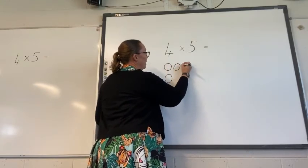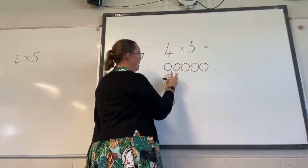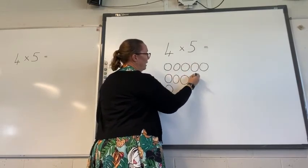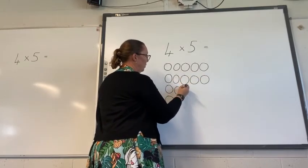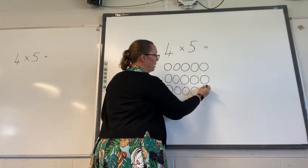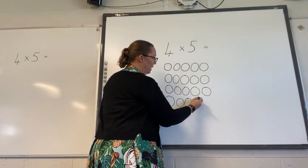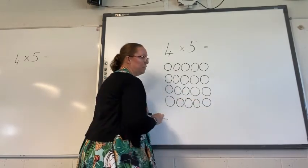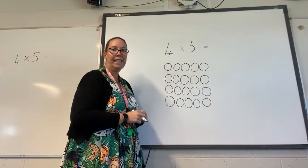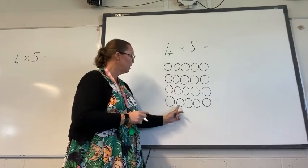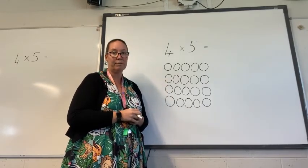At the moment I've got one column with four in it. So each row needs to have five in it. So I'm going to go across five. So now you can see I've got my four rows, and each row has five.